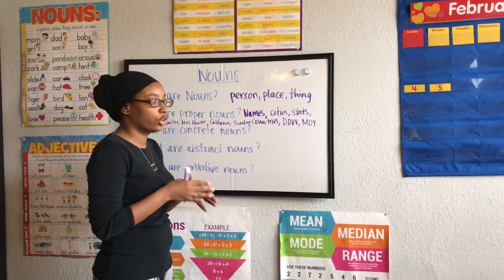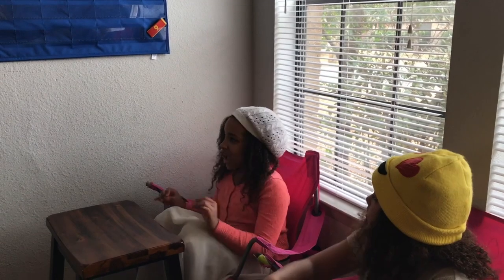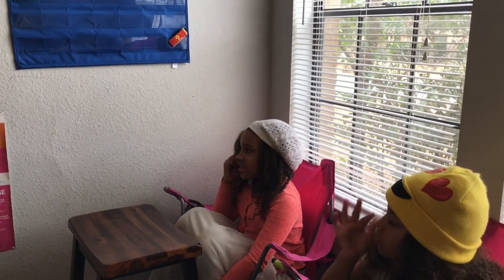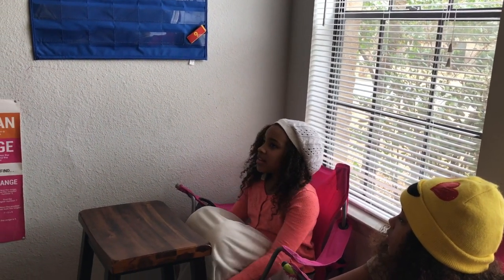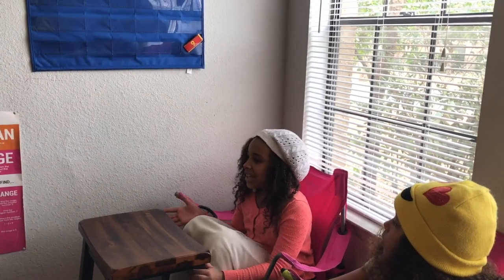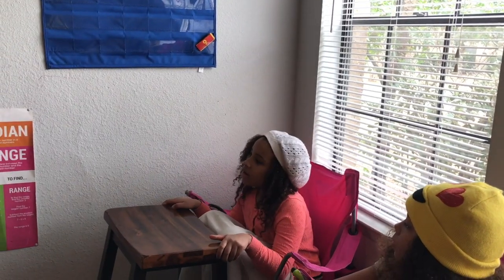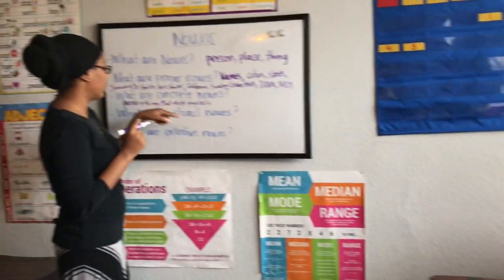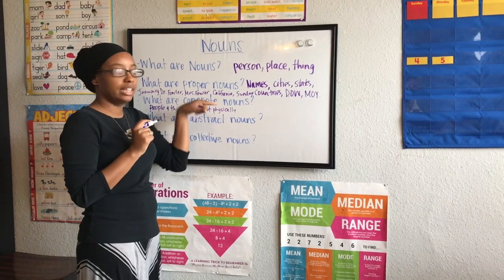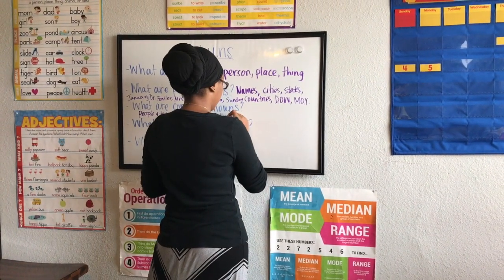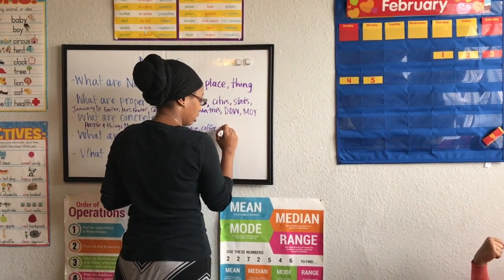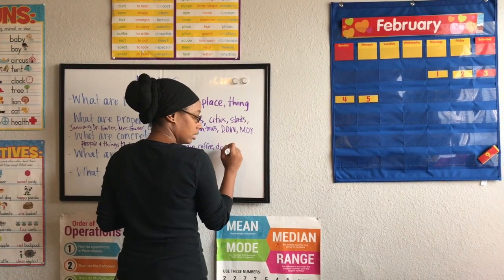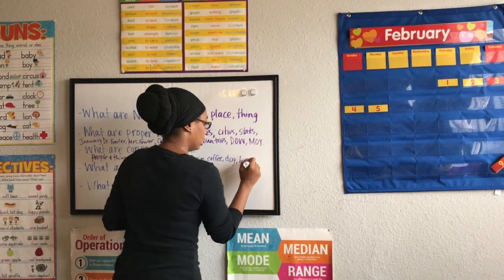Gianna, what are concrete nouns? Concrete nouns refer to people and things that exist physically, that can be experienced with your five senses — like water, rain, coffee, books, buildings, hair, a dog, a beach, and other various things. So concrete nouns are people and things that exist physically. Examples include rain, coffee, a dog, books, and hair.